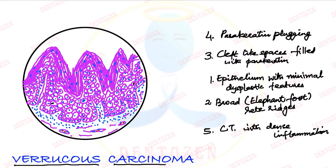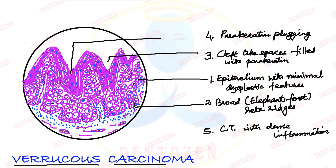Now let's quickly label all these features. First: epithelium with minimal dysplastic features. Second: broad rete ridges or elephant foot-shaped rete ridges. Third: cleft-like spaces filled with parakeratin — when filled with parakeratin it gives an appearance called parakeratin plugging, which is the hallmark feature of verrucous carcinoma. Fourth: connective tissue with dense inflammation. That is the diagram of verrucous carcinoma.